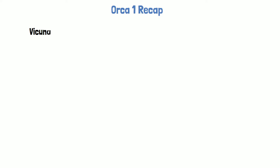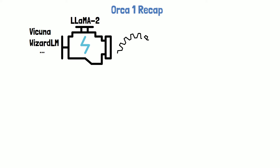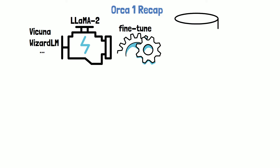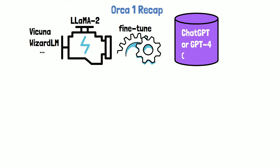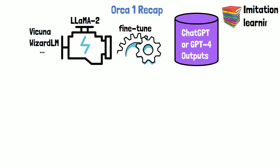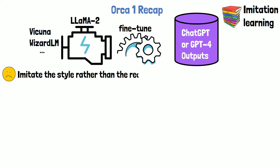Let's start with the Orca 1 recap. Many top large language models such as Vicuna and WizardLM take a base large language model such as LLaMA 2 and enhance it by fine-tuning on a dataset created using responses from ChatGPT or GPT-4. This process of learning from the outputs of a different model is called imitation learning. We refer to the trained model as the student model and ChatGPT or GPT-4 as the teacher model. An insight from Orca 1 is that with imitation learning, student models mostly learn to imitate the teacher model's style rather than its reasoning process, which can cause the student model to generate responses in the same style as the teacher but wrong.